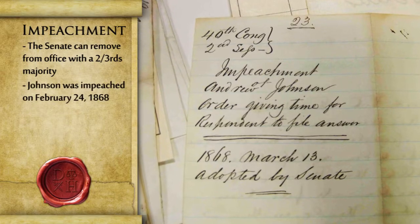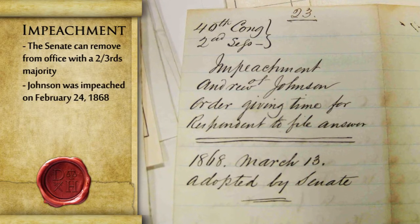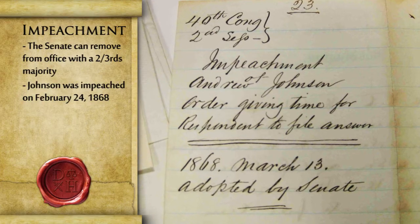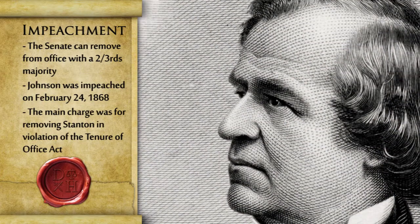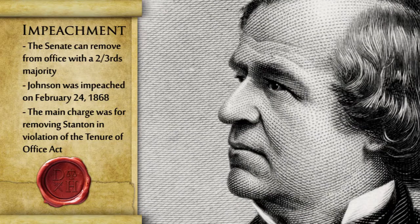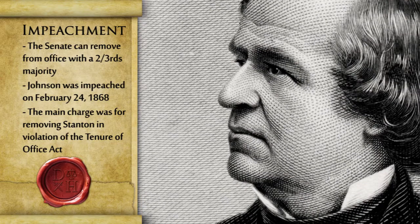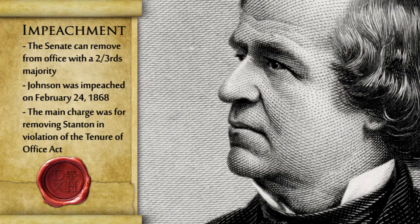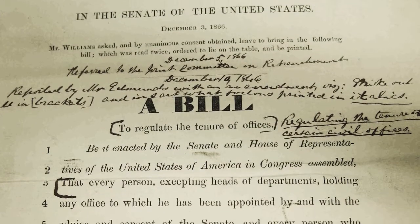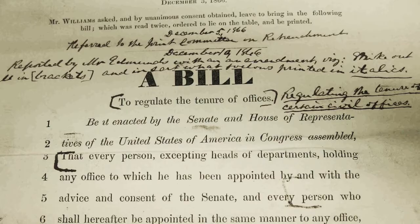The Articles of Impeachment of Andrew Johnson for High Crimes and Misdemeanors was passed on February 24, 1868. They passed 11 charges against him, which basically accused him of dismissing Edwin Stanton and appointing Thomas without the approval of the Senate. To restrict the president's power over the Executive Department, Congress passed the Tenure of Office Act.